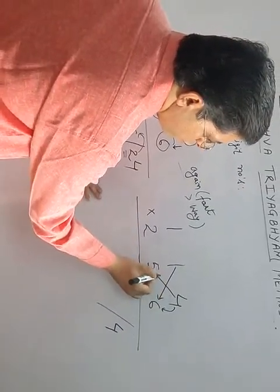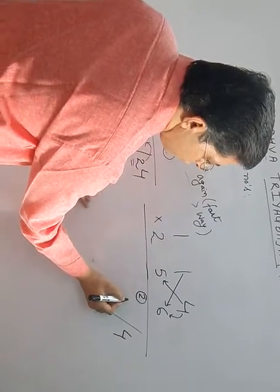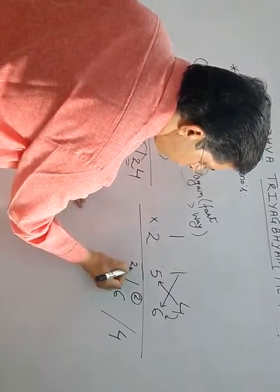Now, 1 times 6 is 6. 5 times 4 is 20. 20 and 6 is 26. 26, 6 put here. And take carry over 2.